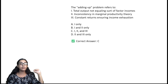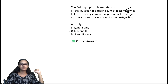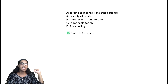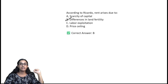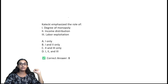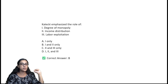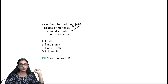The adding-up problem refers to all of the above — option C. According to Ricardo, rent arises due to differences in land fertility — option B. Kalecki emphasised the role of the degree of monopoly in income distribution — option B.